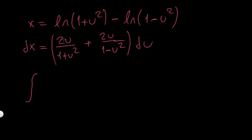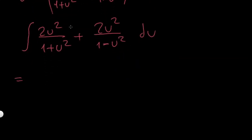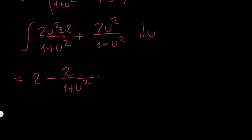I had u times dx, where dx is this expression, so multiplying by u I get 2u squared over (1 + u squared) plus 2u squared over (1 minus u squared). For the first fraction, the numerator is nearly twice the denominator, so I add and subtract 2: this gives 2 minus 2/(1 + u squared). For the second term similarly, I get minus 2 plus 2/(1 minus u squared).